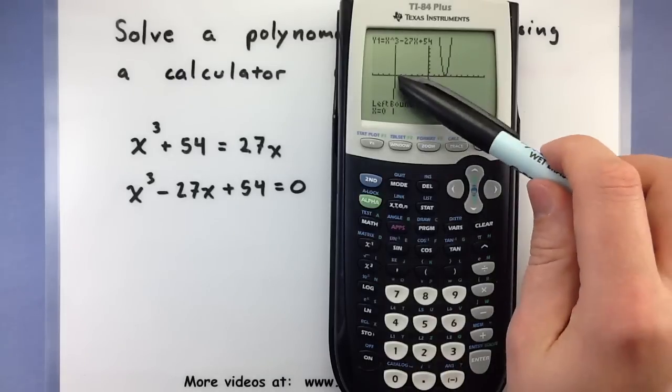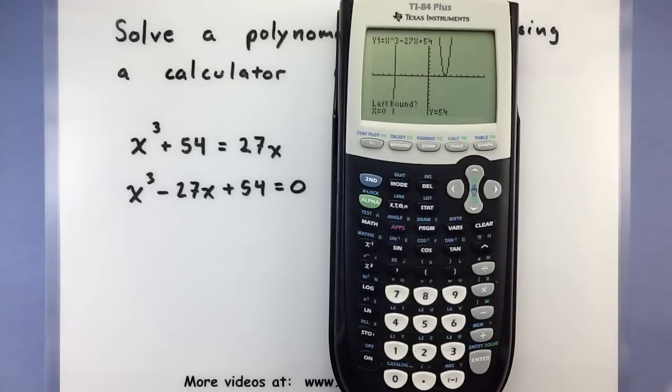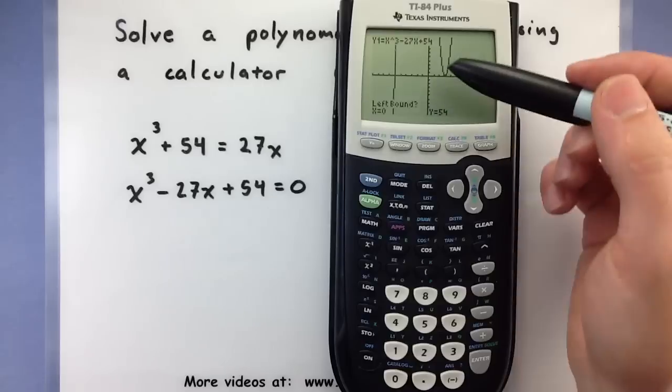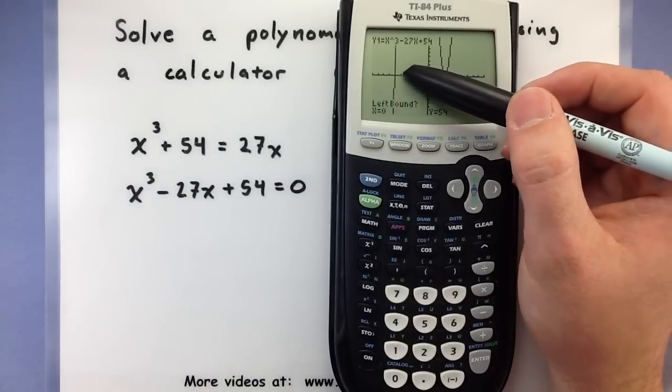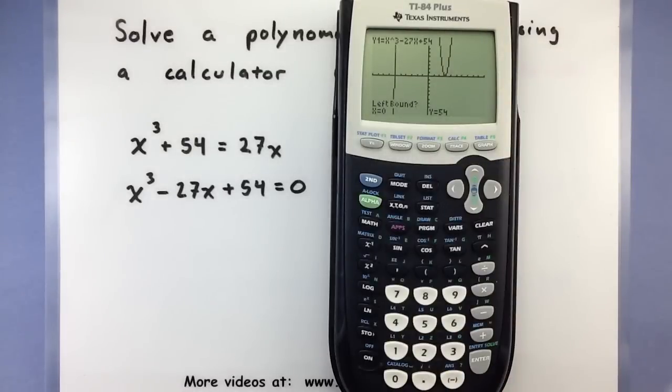Now if we want to find this first zero down here, we need to choose a left bound, a right bound, and then make a guess. So looking at the little tick marks here, negative 1, negative 2, negative 3, negative 4, negative 5, negative 6, it looks like it's probably negative 6, but I'm not entirely sure.